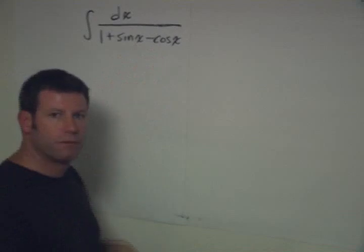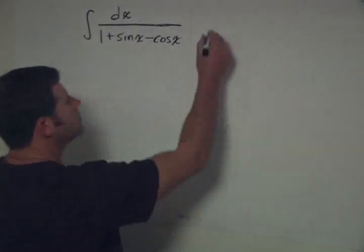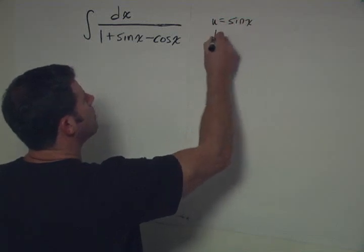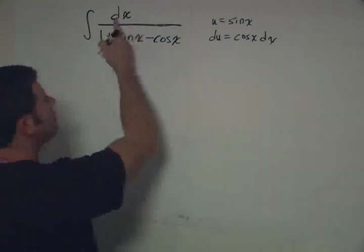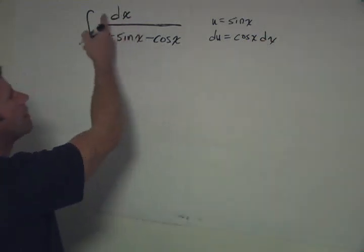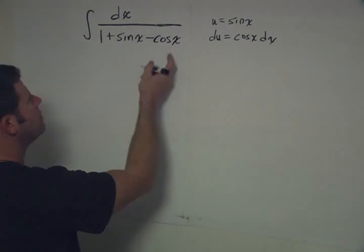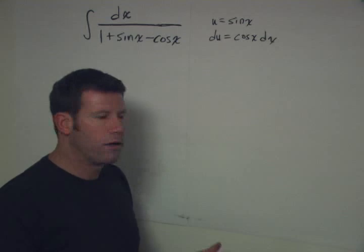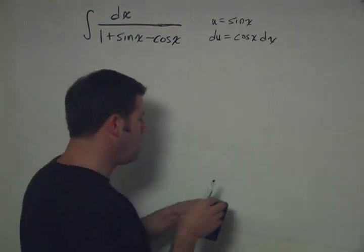Let's verify that a simple substitution like u equals sine x — where du is cosine x dx — is not going to help. We don't have any cosine or sine terms in the numerator, so that's not going to help us. Plus, we would end up with some weird thing in the denominator. That simple substitution will not work.